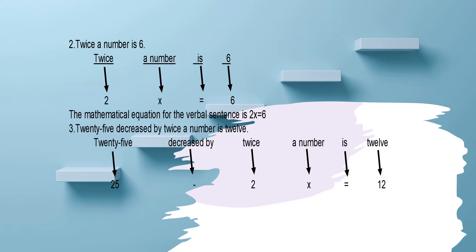Example number two: Twice a number is 6. Starting from the word 'twice,' which means the number 2; 'a number' is x, giving us 2x; 'is' means equals; and 6. So the mathematical equation for this verbal sentence is 2x equals 6.